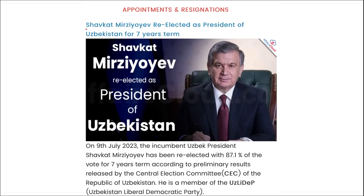Shavkat Mirziyoyev has been reelected as the President of Uzbekistan for a seven-year term, according to preliminary results released by the Central Election Committee of the Republic of Uzbekistan.